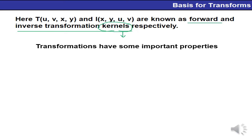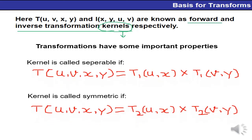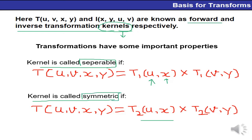Transformations have some important properties. The kernel is known as separable if it can be written as t(x,u,y,v) = t₁(u,x) × t₁(v,y) — meaning one part is in the spatial domain and the other in the frequency domain. The kernel is called symmetric if it satisfies t₂(u,x) = t₂(v,y). These two properties — separable and symmetric — are utilized in image transforms.